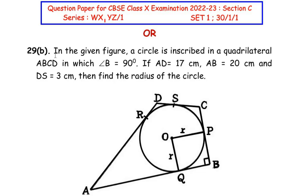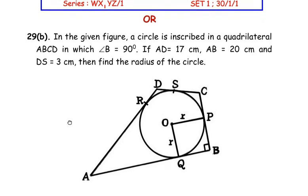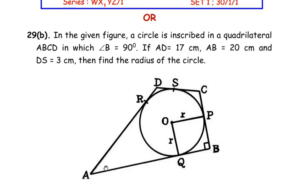Question 29A and 29B are both from the circles chapter. We will start with the B question first. In the given figure, a circle is inscribed in a quadrilateral ABCD in which angle B is 90 degrees. The side length AD is 17 cm, AB is 20 cm, and DS is 3 cm. Find the radius of the given circle.